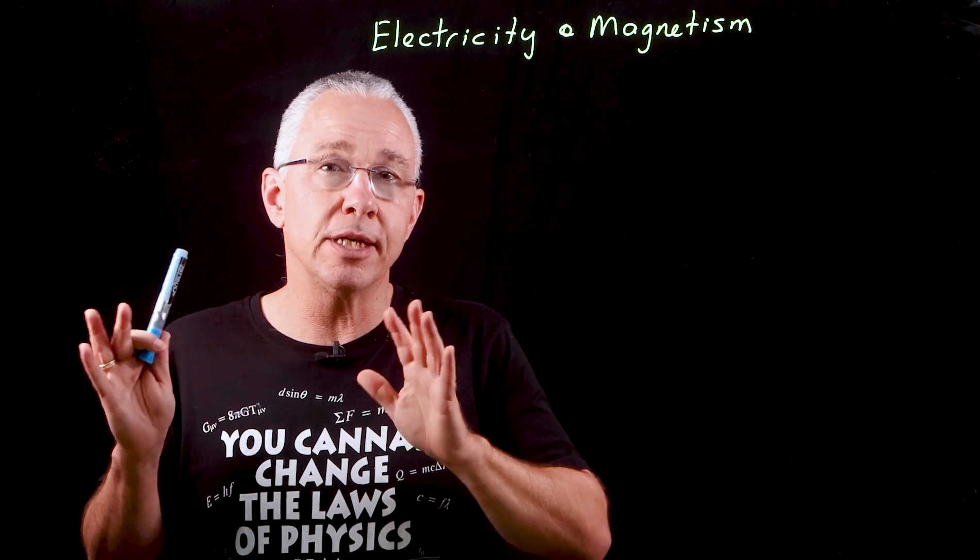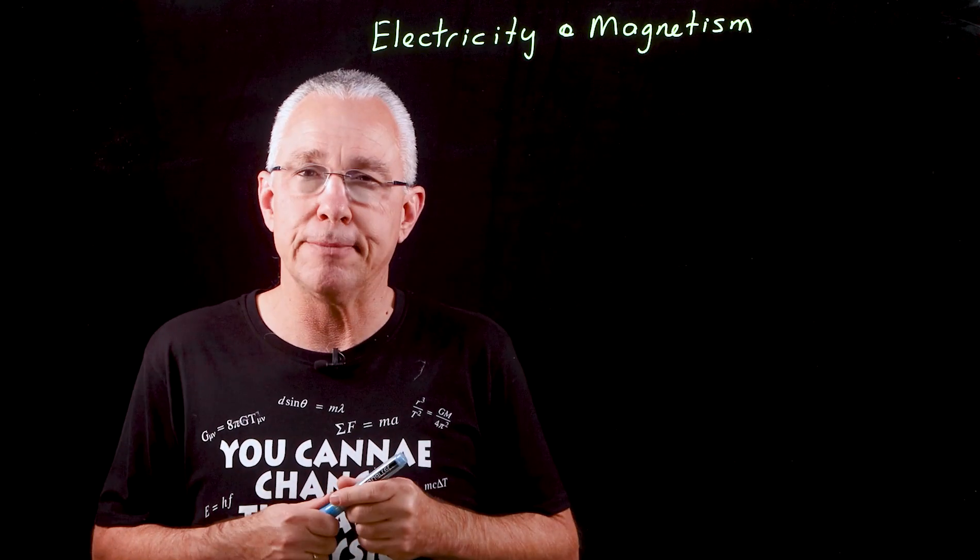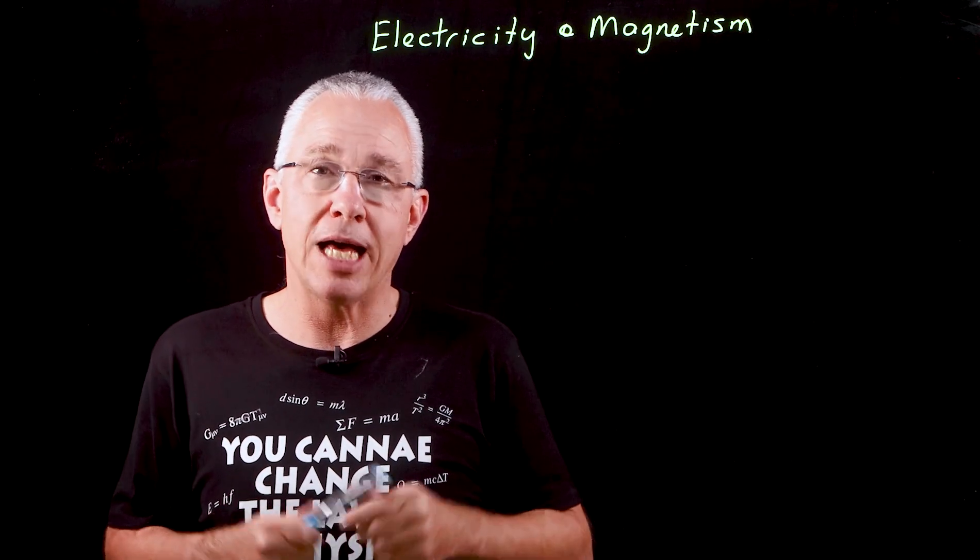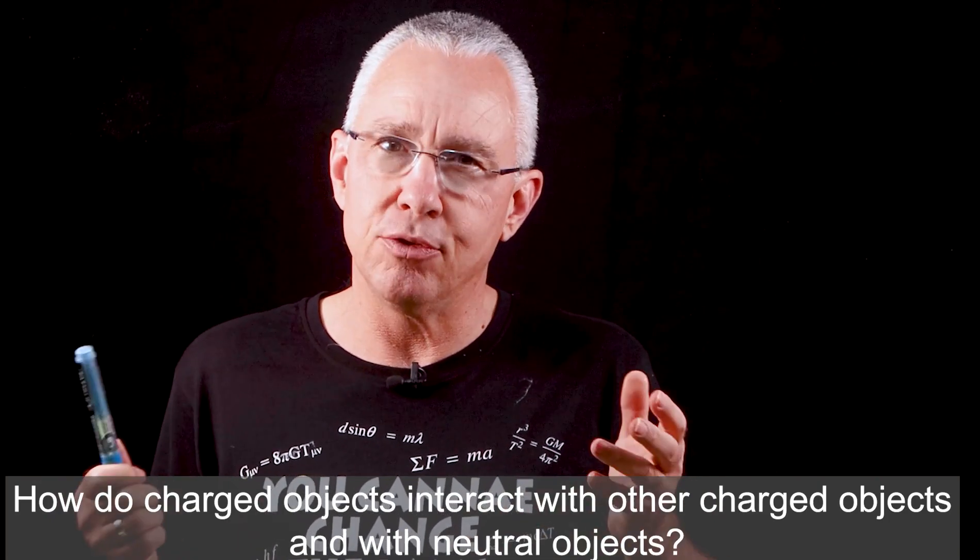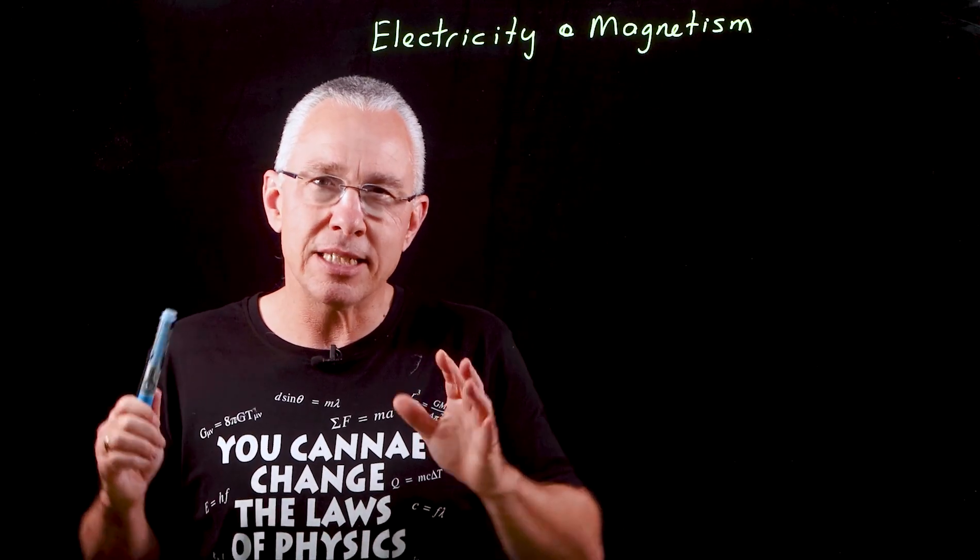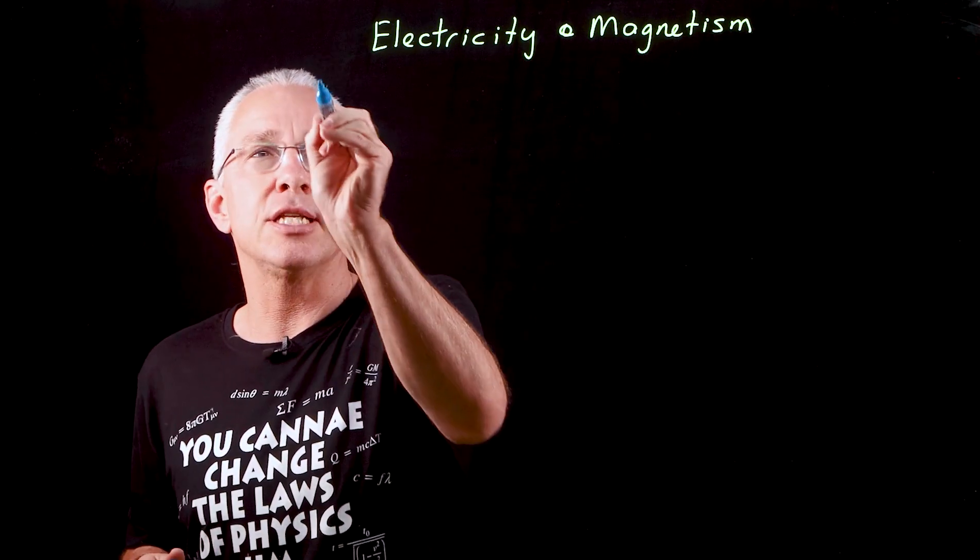This topic is divided into three key inquiry questions. The first two deal with the idea of electricity and the last one deals with magnetism. The first inquiry question asks: how do charged objects interact with other charged objects and neutral objects? In essence, this is often referred to as the concept of electrostatics.